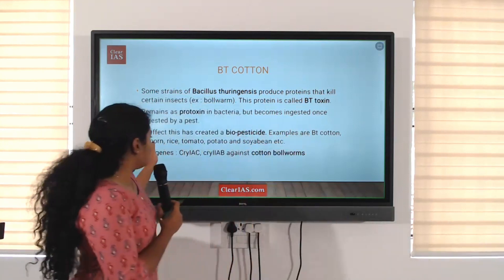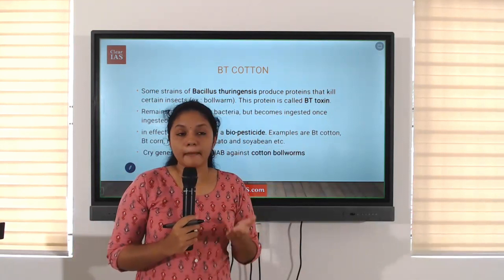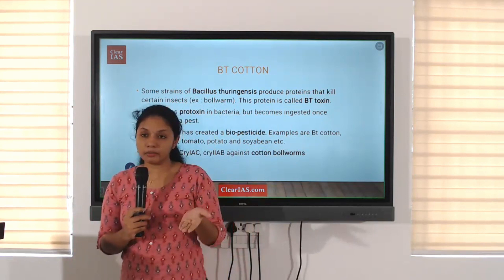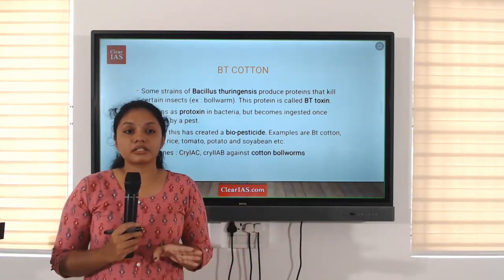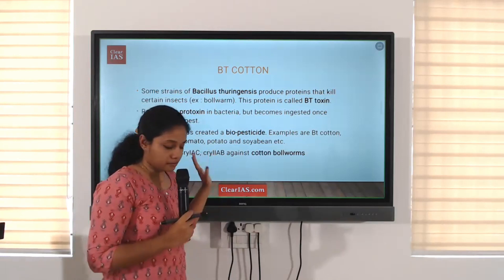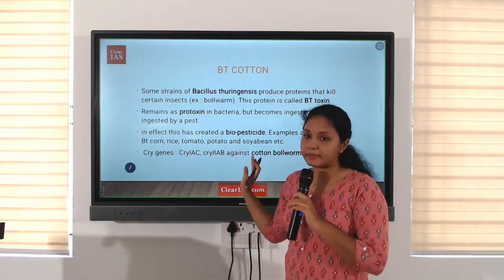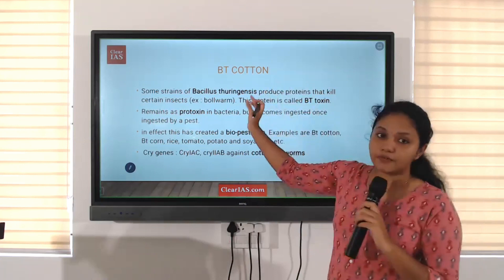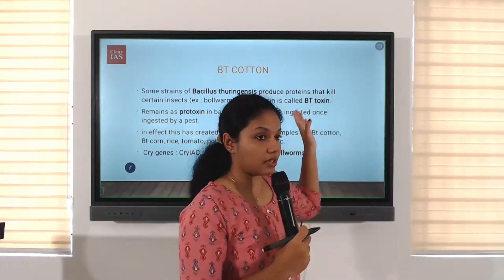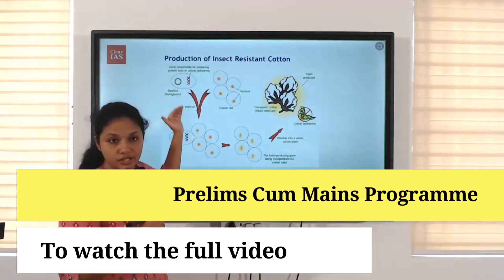For example, Bt cotton, rice, tomato — there are other varieties as well in which Bt is introduced. One example is Bt brinjal, but this is not commercially cultivated in India because it has only got environmental cultivation clearance, not commercial clearance. Only commercial cultivation is permitted with Bt cotton. The CRI genes are CRI-1-AC and CRI-2-AB — you don't need to memorize these genes, just understand that there are genes responsible for the formation of protoxins. This is mainly an example of recombinant DNA technology, where we are altering the genetic material of the plant.